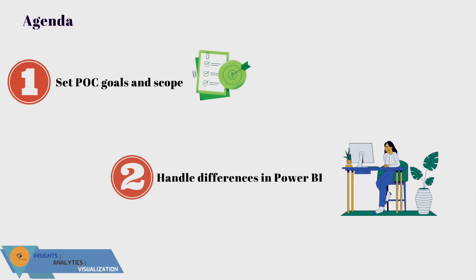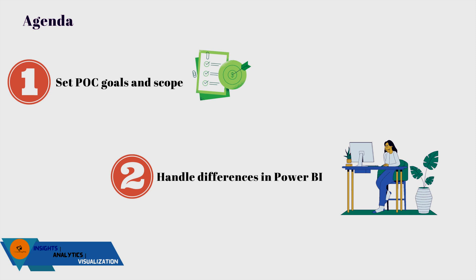This stage is conducted in two parts. First, you have to set your POC goals and scope, and second, you need to handle differences in Power BI. Let's get to know more about each of these.